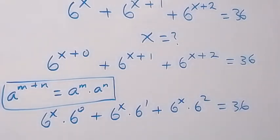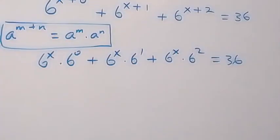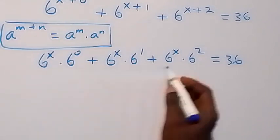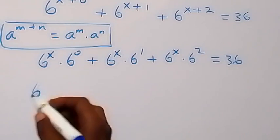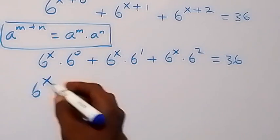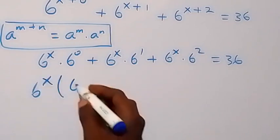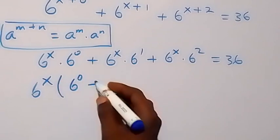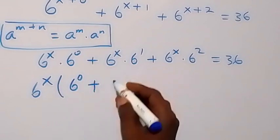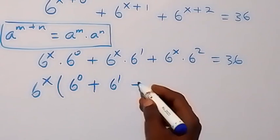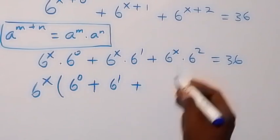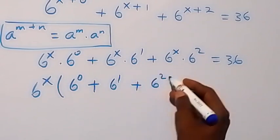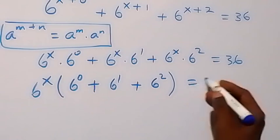Then in the next step, we have 6 raised to power x common here. So when we take 6 raised to power x out, this gives us 6 raised to power x into bracket: 6 raised to power 0, plus 6 raised to power 1, plus 6 raised to power 2, equals 36.